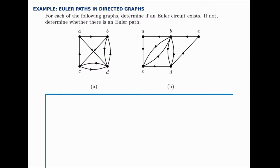We're going to count the in-degrees and out-degrees. So for node A, we have one in and two out. For node B, we have two in and two out. For node C, we have two in and two out.